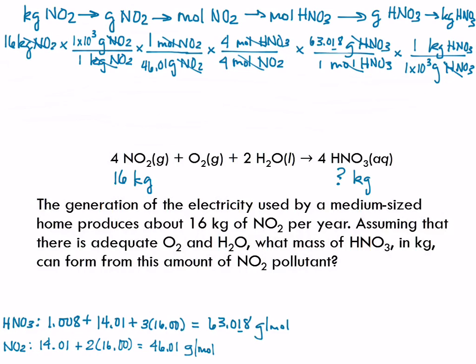Now we've got this big, long, scary-looking equation. Just get out your calculator. Go left to right, top to bottom as you go. There's no need to write down intermediate values with this method. You just calculate and write down an answer at the end. So I've got 16 times 1 EE3 divided by 46.01 times 4 divided by 4 times 63.018 divided by 1 EE3. And the answer I'm coming up with on my calculator is 21.9145 kilograms. I need two significant figures, so my answer is going to be 22 kilograms of nitric acid.